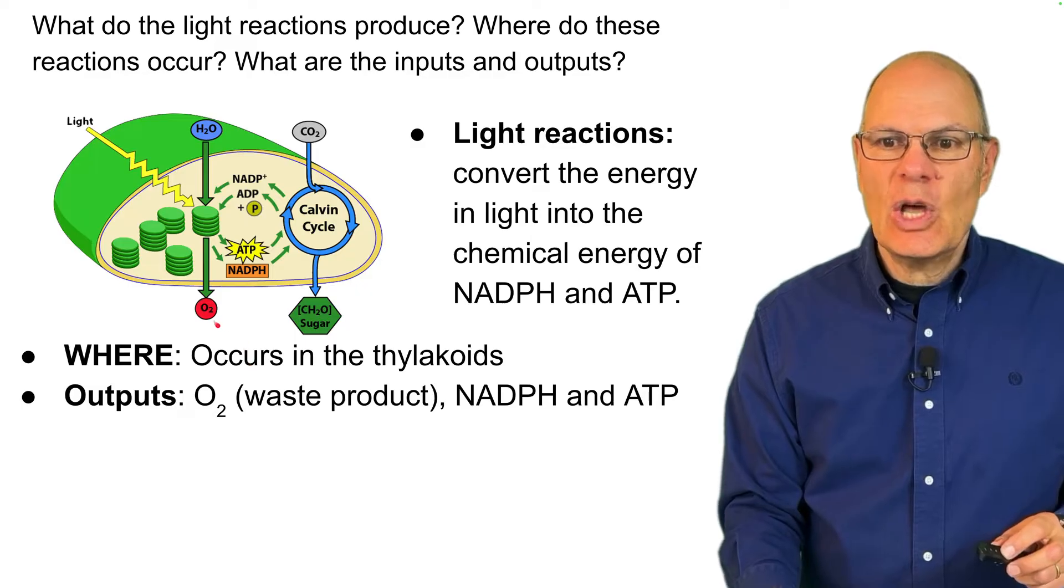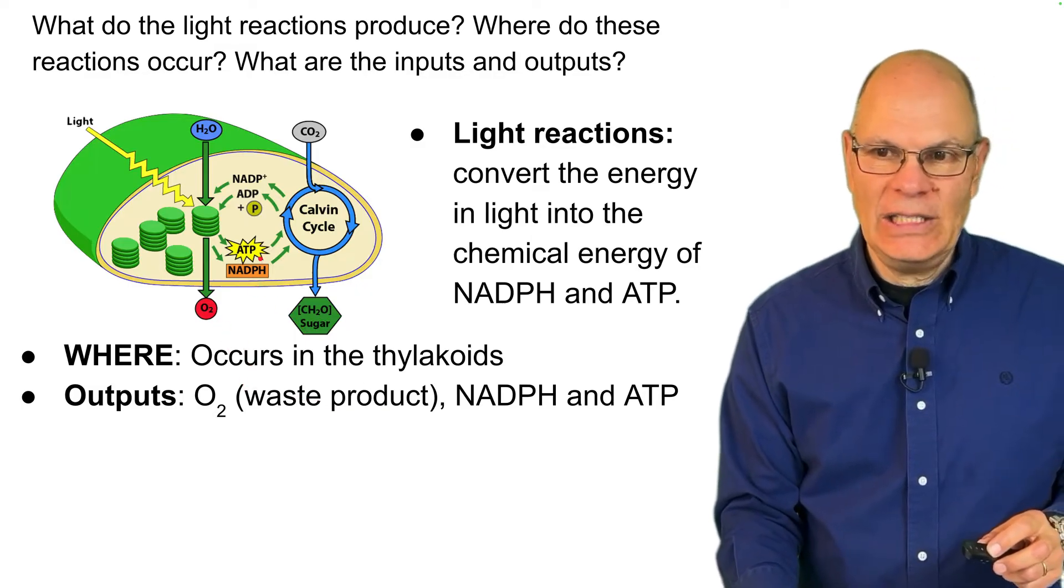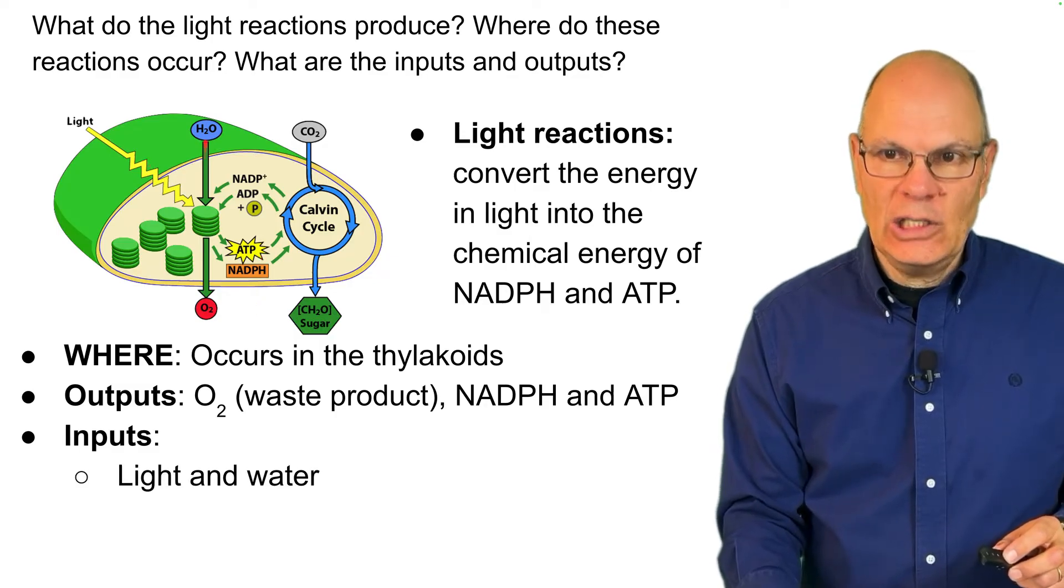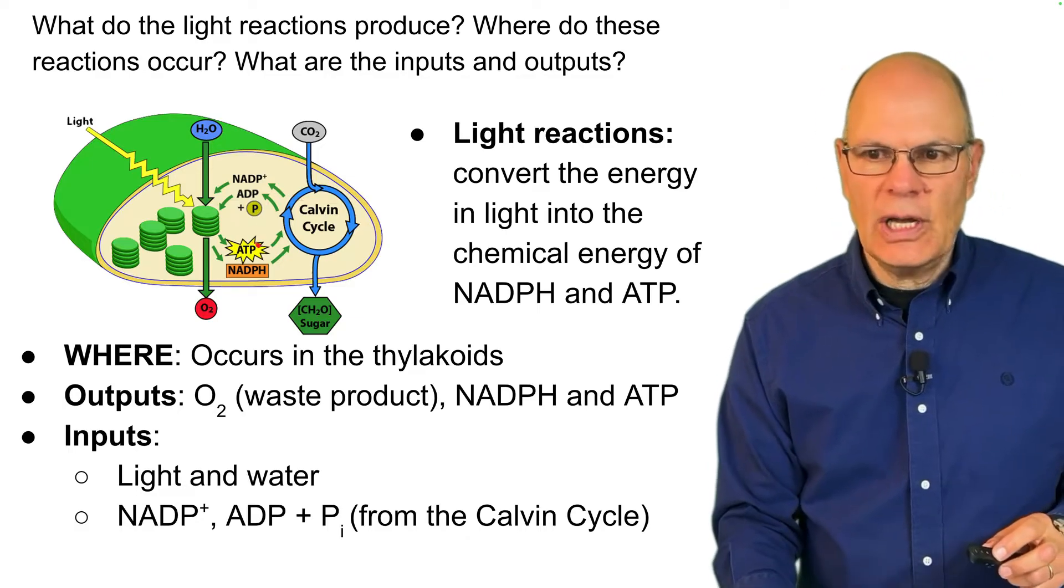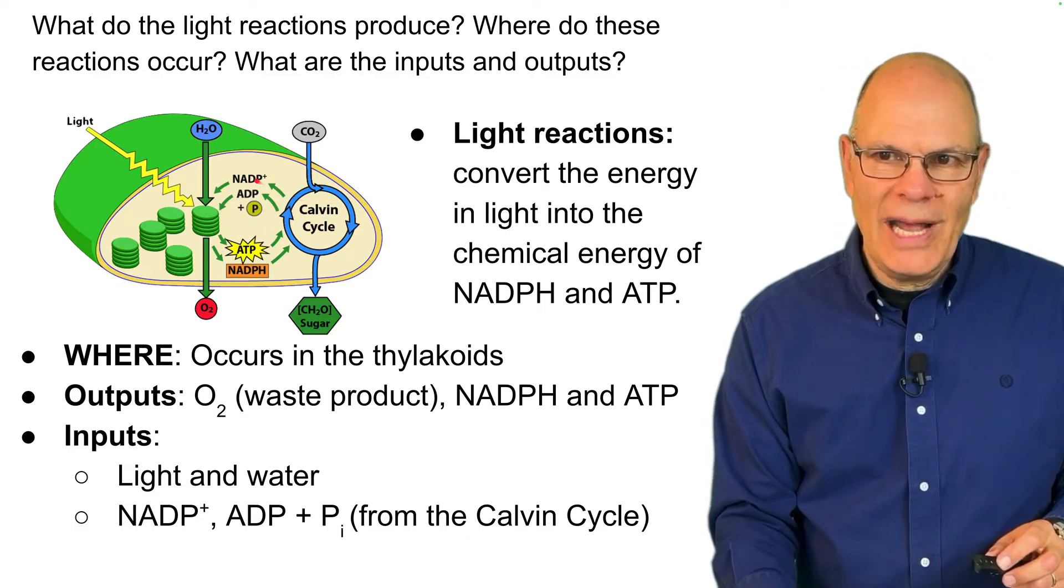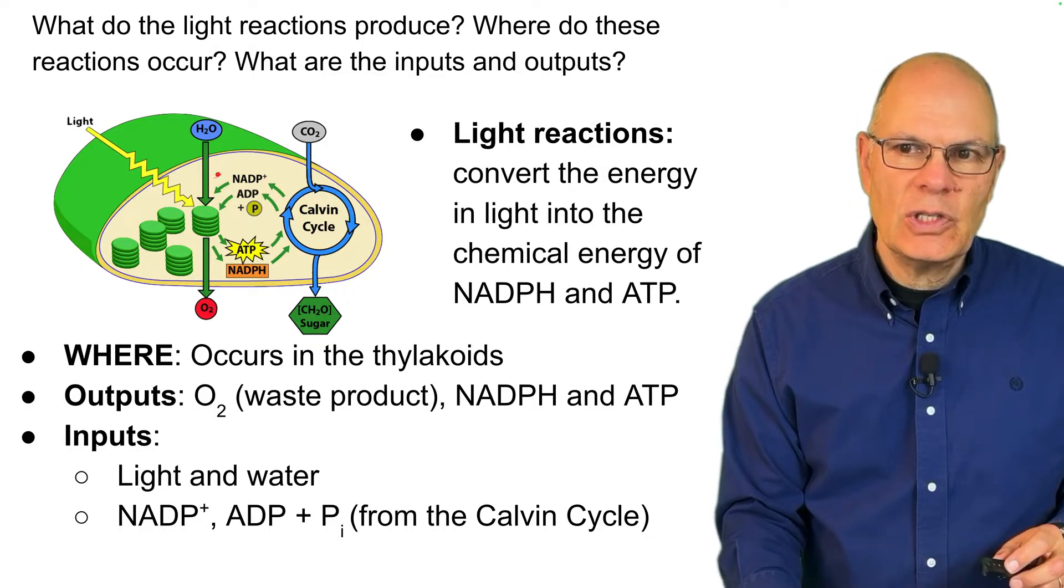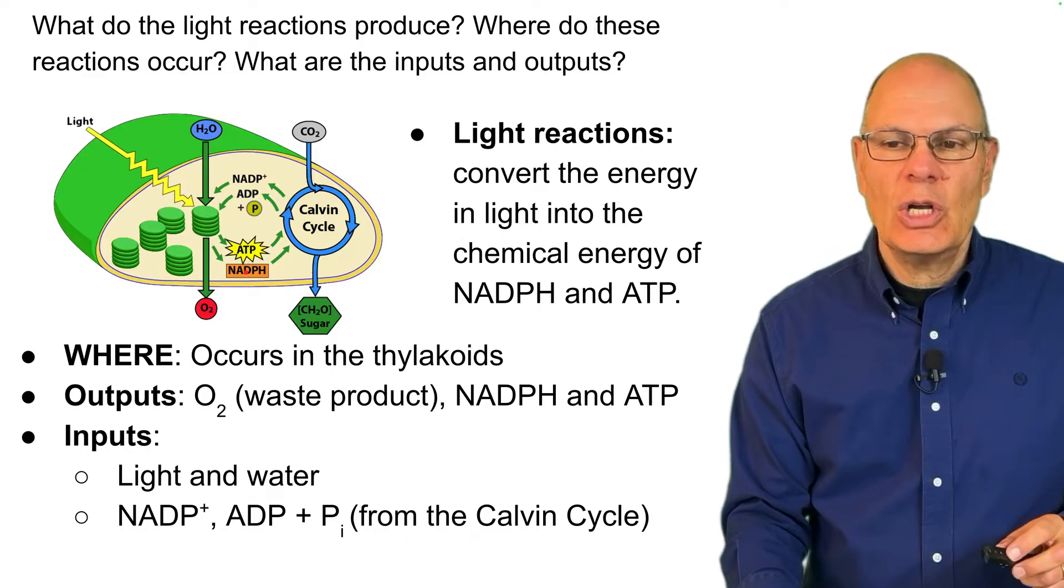Oxygen is the waste product, as well as NADPH and ATP. The inputs are light and water. The outputs of the Calvin cycle are the inputs of the light reactions. So NADP plus, ADP, and P are the inputs. Those get fed into the light reactions. ATP and NADPH go out.